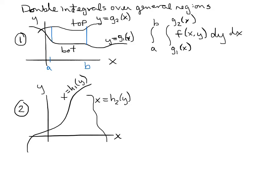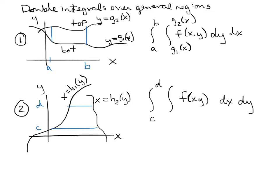In this case, we bound these functions by numbers c and d along the y-axis. When we set up the integral, it's the integral from c to d on the outside — those are y values, so dy goes on the outside, and dx goes on the inside. The x's go from the rightmost x, which is the most positive, on the top of the integral: h₂(y) on top, h₁(y) on the bottom.